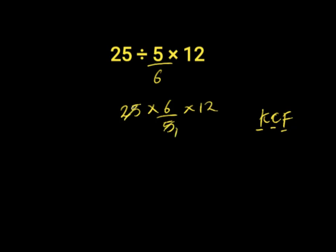5 into 1, 5 into 25 is 5. Then we're left with 5 times 6 times 12.